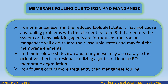If iron or manganese is in the reduced, soluble state, it may not cause any fouling problems. But if air enters the system or any oxidizing agents are introduced, the iron or manganese will oxidize into their insoluble states and may foul the membrane elements. In their insoluble state, iron and manganese may also catalyze the oxidative effects of residual oxidizing agents and lead to RO membrane degradation. Iron fouling occurs more frequently than manganese fouling.